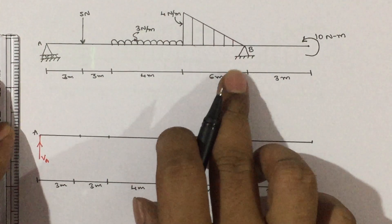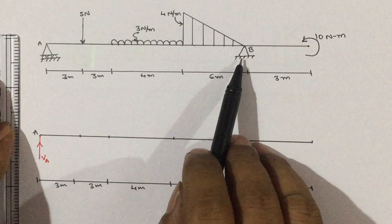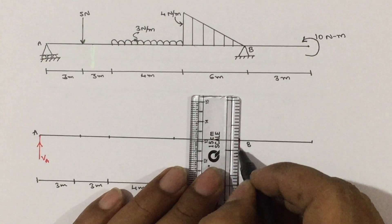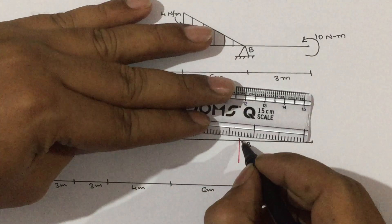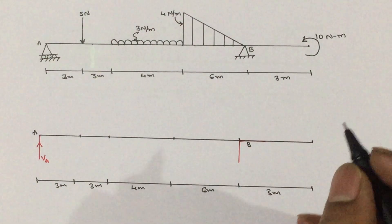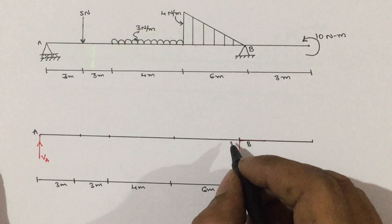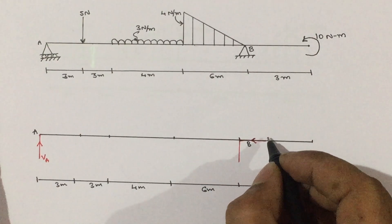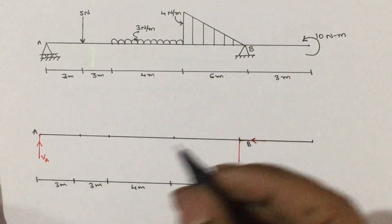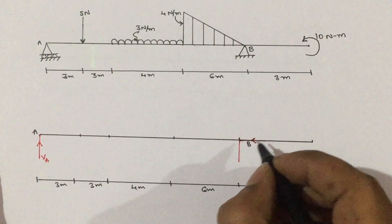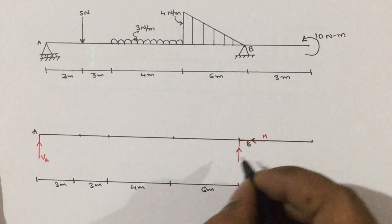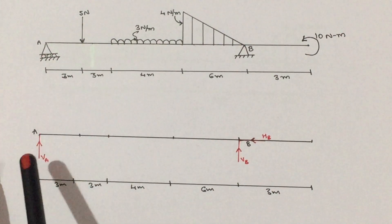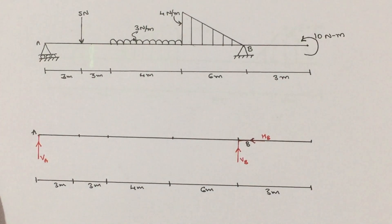We have another support at B — triangle with shaded portion, that is a pin support. A pin support has two reactions: one vertical and one horizontal. If you do not know the direction of the horizontal reaction, just assume one. If your answer is correct, you will get a positive value; if incorrect, you will get a negative value. So we have HB (horizontal) and VB (vertical) at point B.